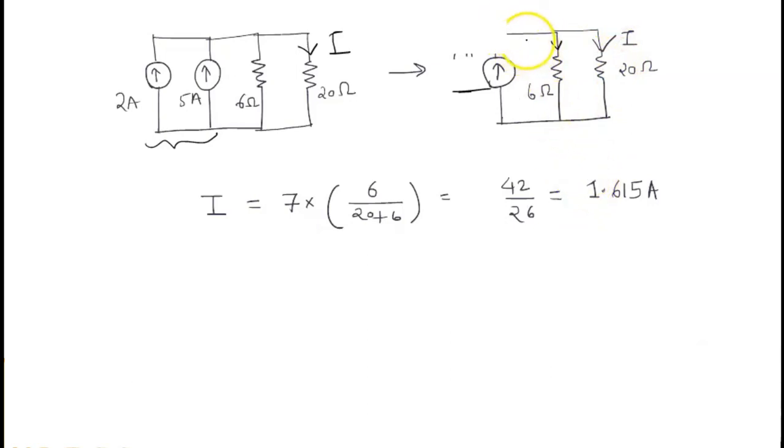Now this 7 ampere current is going to split up between these two resistors. Of course, current in 20 ohm resistance branch will be lesser than current in 6 ohm branch because 20 ohm is larger. The current in 20 ohm branch is given by the current division: I is equal to 7 into the value of opposite resistance 6 ohm divided by the addition of two resistances. This is nothing but current division. And if you solve this, you get 42 by 26, which is nothing but 1.615 ampere.